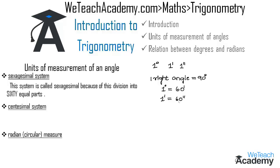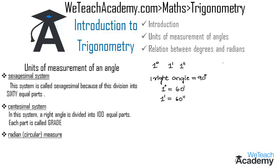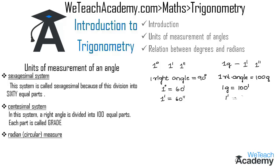In the centisimal system, a right angle is divided into 100 equal parts and each part is called a grade. A grade is divided into 100 equal parts called minutes, and a minute is divided into 100 equal parts called seconds. Thus: 1 right angle = 100 grades, 1 grade = 100 minutes, and 1 minute = 100 seconds.